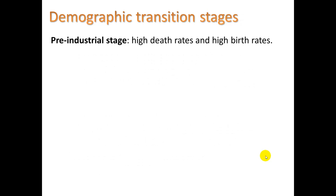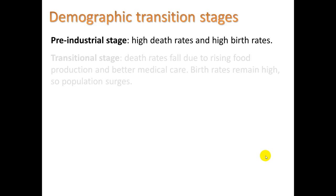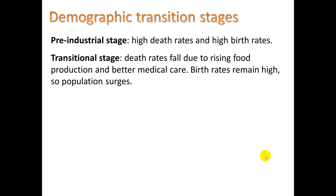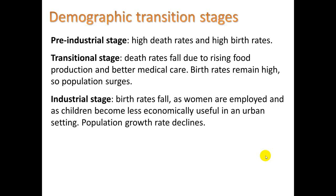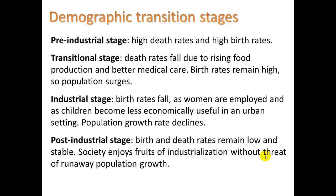These are the stages to write in your notes. Pre-industrial stage: high death rates and high birth rates. Transitional stage: death rates fall due to rising food production and better medical care; birth rates remain high, so population surges. Industrial stage: birth rates fall as women are employed and children become less economically useful in an urban setting; population growth rate declines. Post-industrial stage: birth and death rates remain low and stable; society enjoys the fruits of industrialization without threat of runaway population growth, and a smaller population can be more affluent.